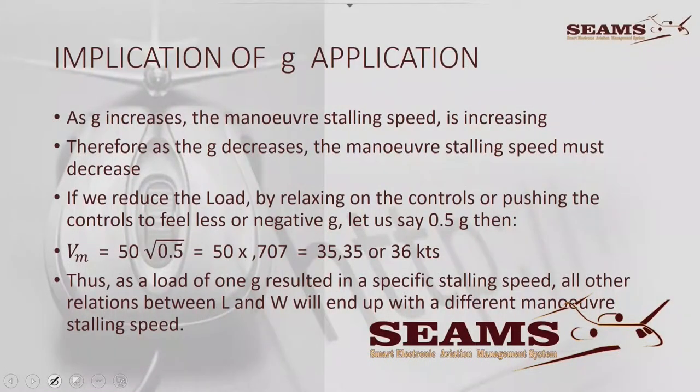What is the implication of G applications? As G increases, the maneuvering stalling speed increases. Therefore, if G decreases, the maneuvering stalling speed decreases. If you take Vm equals Vs using 50 knots, and you are pulling 0G's, then Vm equals 0 — theoretically not stalled.